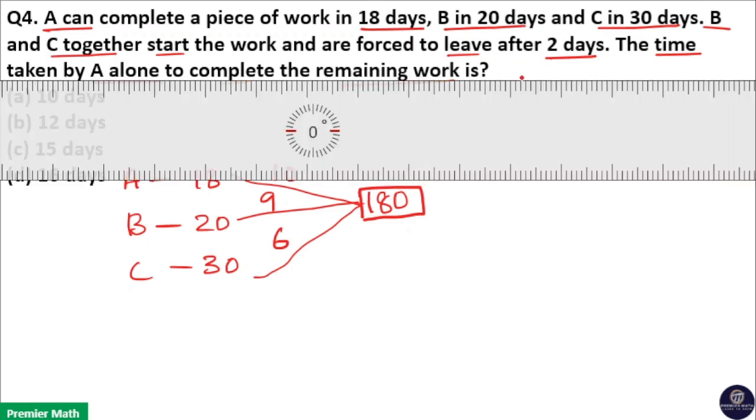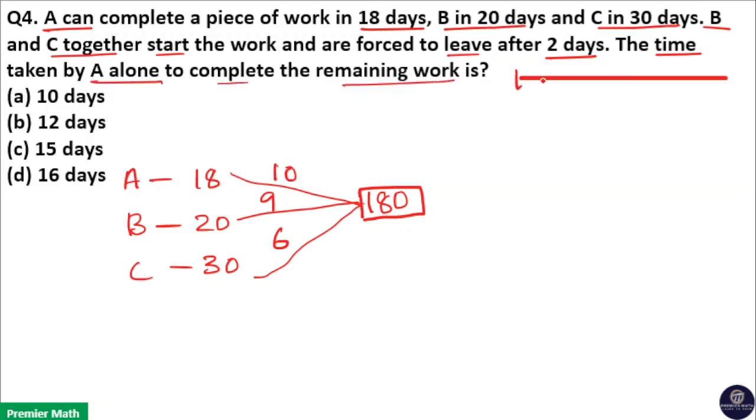Now here the question says B and C started the work and they worked together for 2 days. Then after, B and C leave and the remaining work is completed by A. So we need to find out in how many days A completed the remaining work.